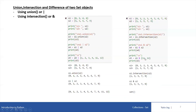Similar to the previous code, we can directly use a set literal for intersection. Suppose S5 = S1.intersection({11, 12}). S1 has elements 0 to 9, and the second set has elements 11 and 12. There are no common elements between S1 and the set {11, 12} — all elements are different. So if I print S5, it will be a blank set. This is how you can use union and intersection, or the OR and AND symbols, to calculate union and intersection of two set objects.